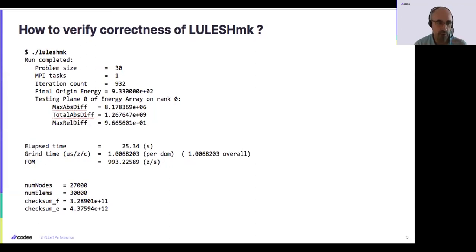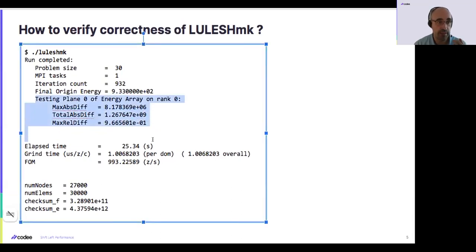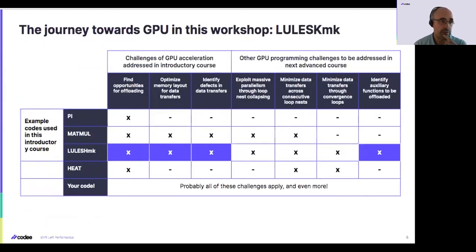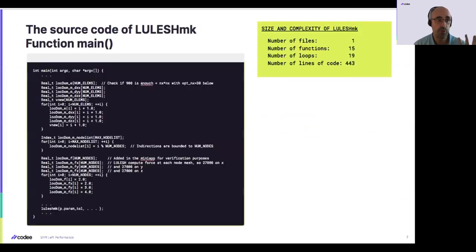Verifying correctness is not easy, but here in LULESH, we just need to check that it is producing the same output that we can see here. So essentially what we propose from the real application is one file, 15 functions, almost 20 loops, 500 lines of code — something a bit bigger than four lines of code in one single loop in one function in the Pi example.